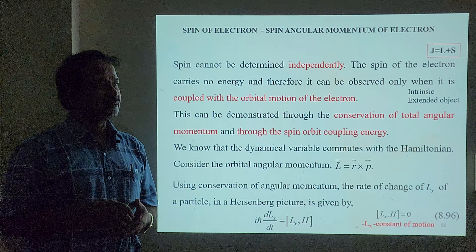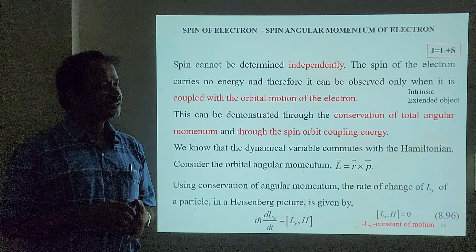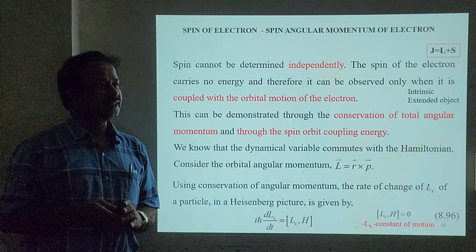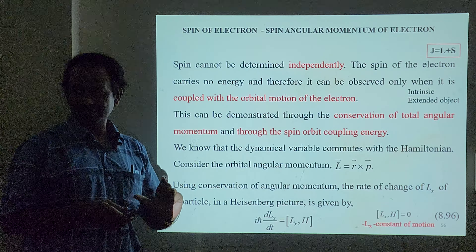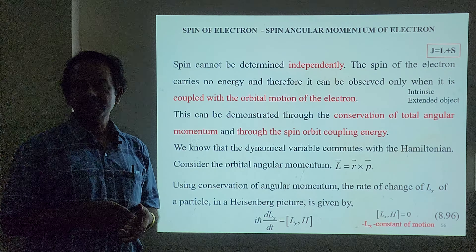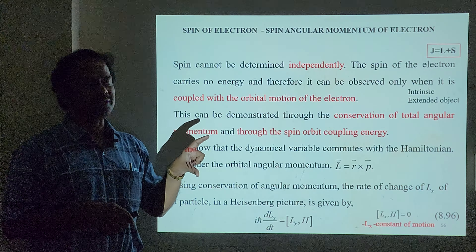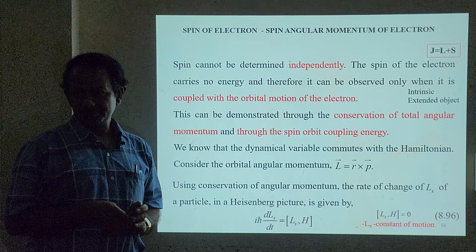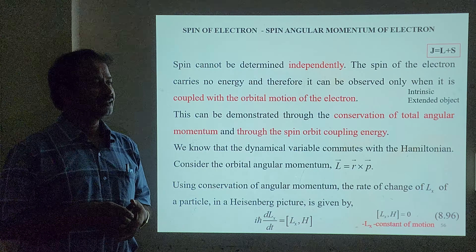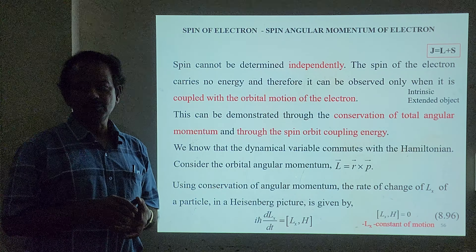At the time, people did not know the proper reason, and this was not clearly explained by Stern and Gerlach. Whereas in 1925, Uhlenbeck and Goudsmit clearly explained the concept of spin, which is nothing but ℏ/2. Spin up corresponds to +ℏ/2, spin down to −ℏ/2. So spin is quantized — the orientation of the angular momentum is quantized, as brought out clearly by Uhlenbeck and Goudsmit.